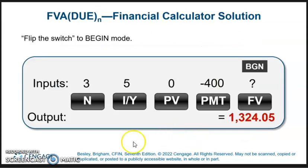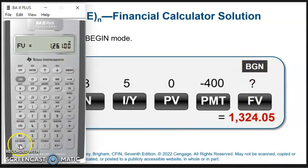On the calculator, everything is the same. We've already got this information in our calculator. We just have to switch it to begin mode. Second, begin is over here above the payment. You use the second key to access begin. Second, begin, so it's in the end mode. Second, enter, enter, and you have to hit clear and compute, get your value, and get $1,324.05.